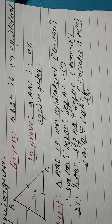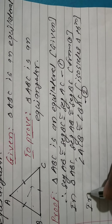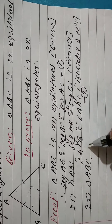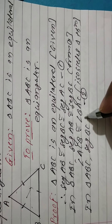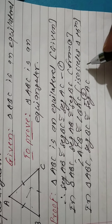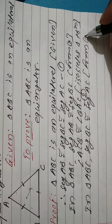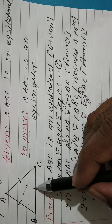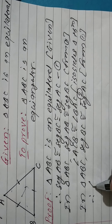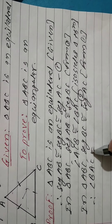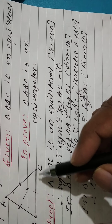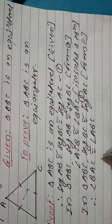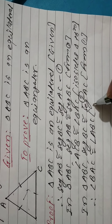Equation two. Similarly, in triangle ABC, from the first statement, segment BC is congruent to segment AC. Therefore, BC's opposite angle is angle BAC, and AC's opposite angle is angle ABC. If two sides are congruent, then their opposite angles are also congruent — by the isosceles triangle theorem.